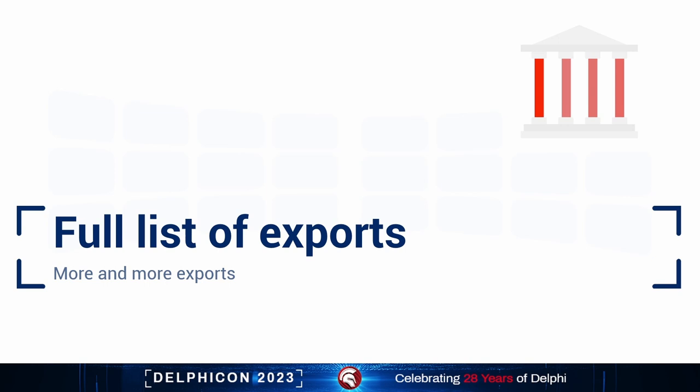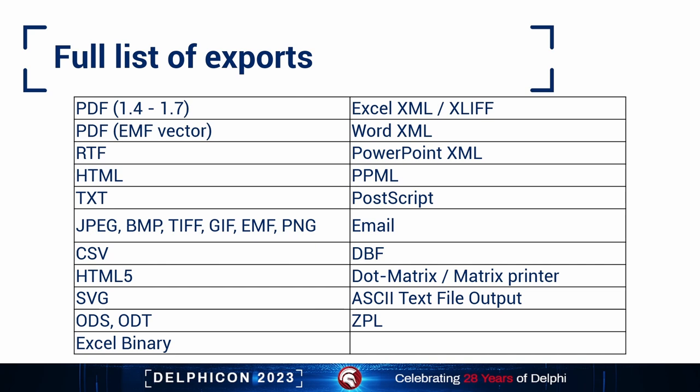Here's the full list of exports currently available in FastReport VCL. There are formats like PDF, Excel and Word documents, HTML export, several picture exports, TXT export and an export for matrix printers, PowerPoint, DBF, ZBL for Zebra printers, and a few more.